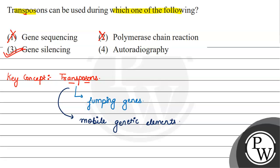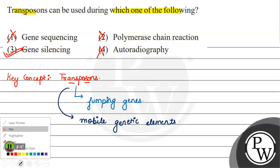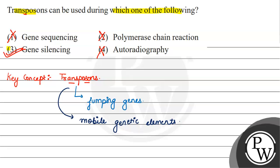Option 3 is correct. Option 4 is wrong because in autoradiography, we use hybridization techniques for detection of a specific gene. Our final answer is option number 3, gene silencing.